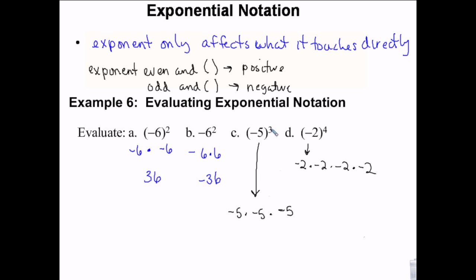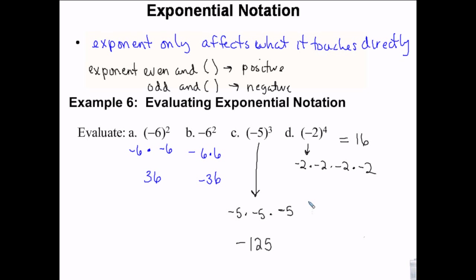As a shortcut: if the exponent is odd, the answer is negative — what's 5 times 5 times 5? That's 125, so negative 125. If the exponent is even, the answer is positive — 2 times 2 times 2 times 2 is 4, 8, 16, so positive 16. You don't have to track each negative sign separately.